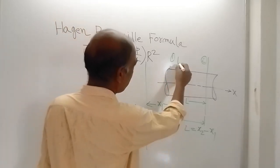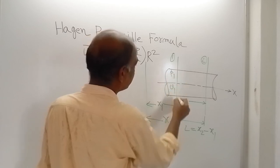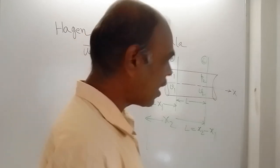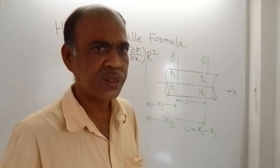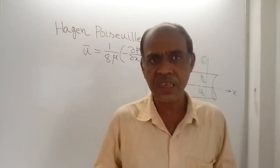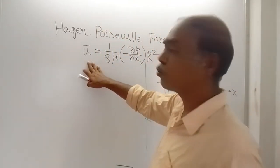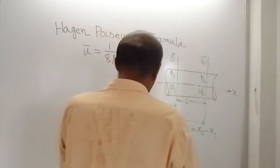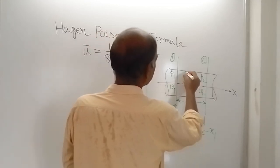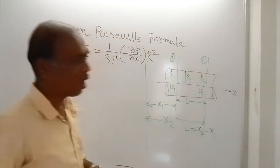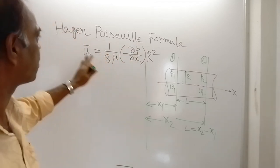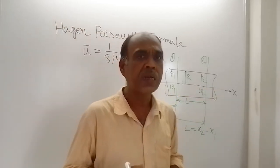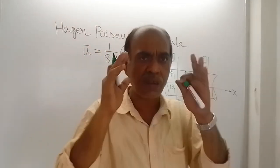At section 1, pressure is P1 and velocity is V1. At section 2, pressure is P2 and velocity is V2. In the last class, the expression for average velocity was discussed: average velocity U_bar is equal to (1/8μ)(−dP/dX)·R², where R is the radius of the pipe. Average velocity was the total discharge through the cross section divided by the area of the pipe.